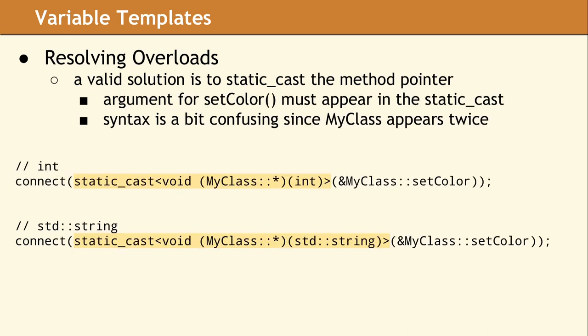One way to indicate the correct overload is by adding a static cast. This provides the extra information the compiler needs in order to determine which overload you intended. We have highlighted the static cast in yellow.